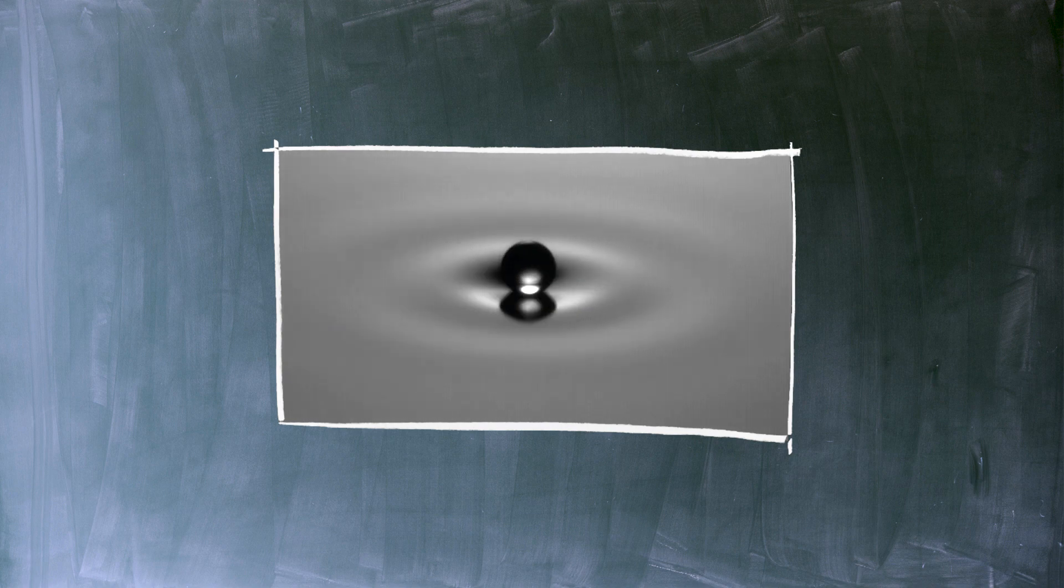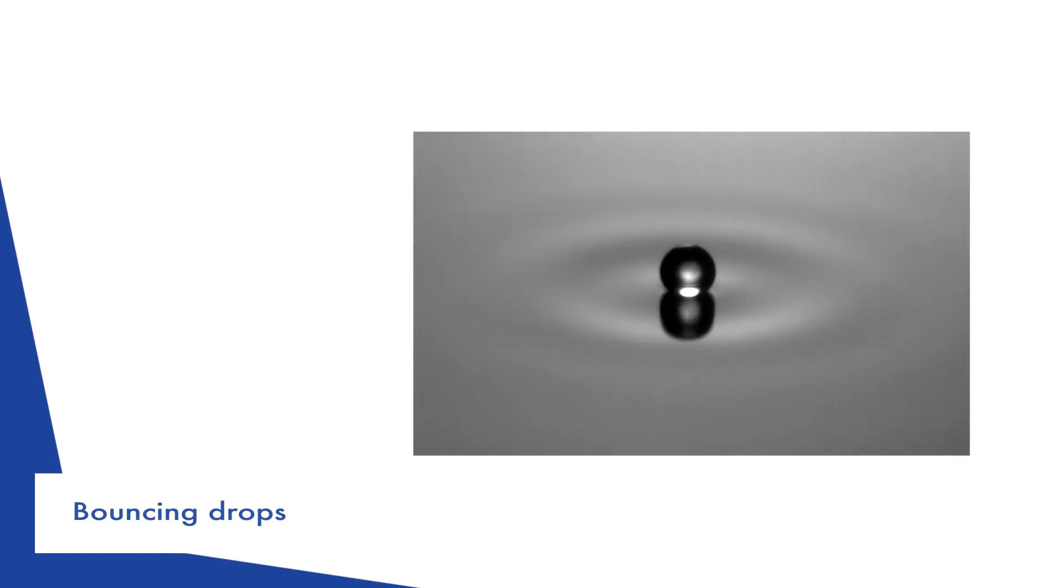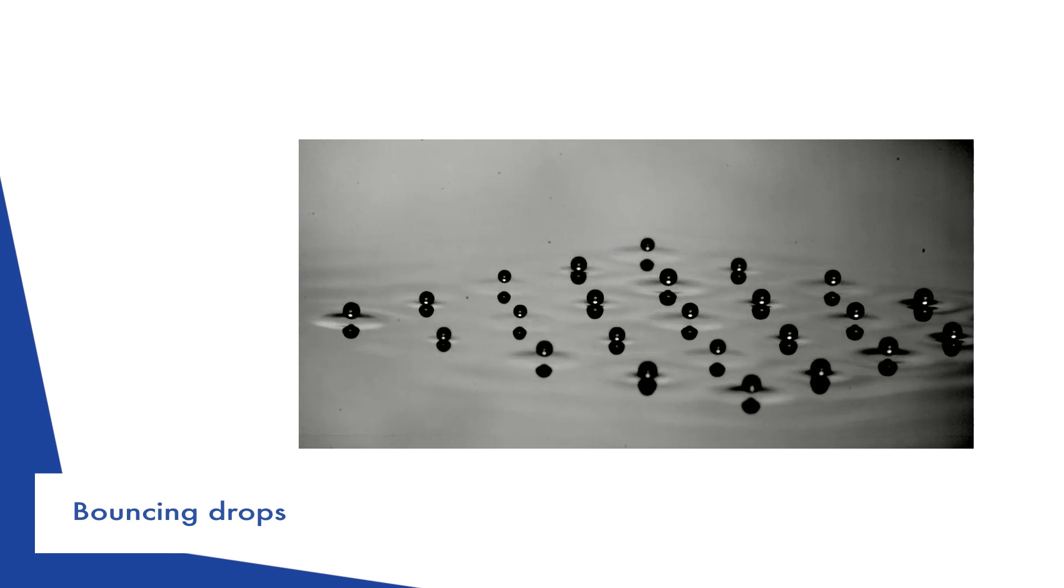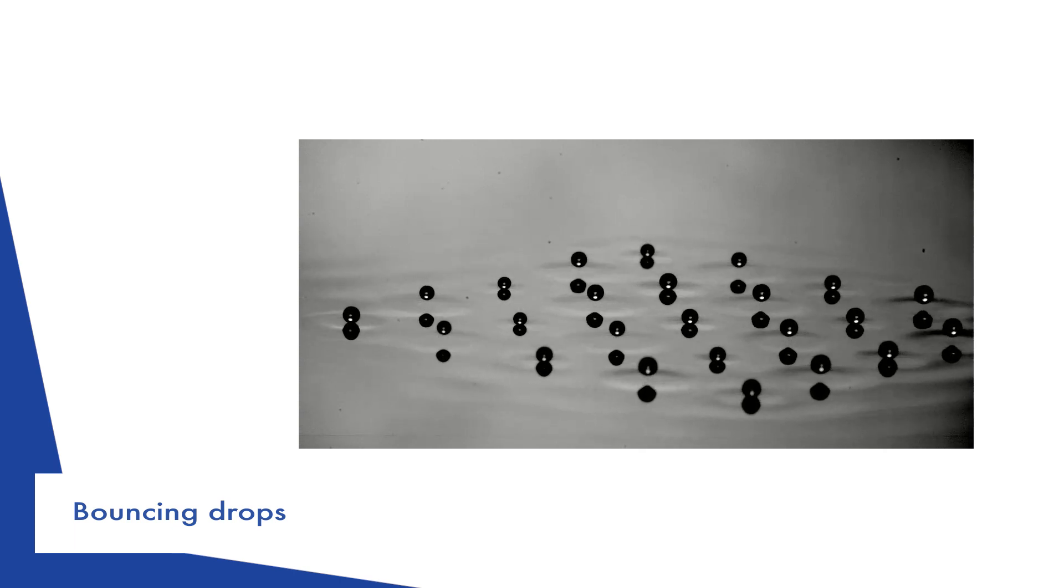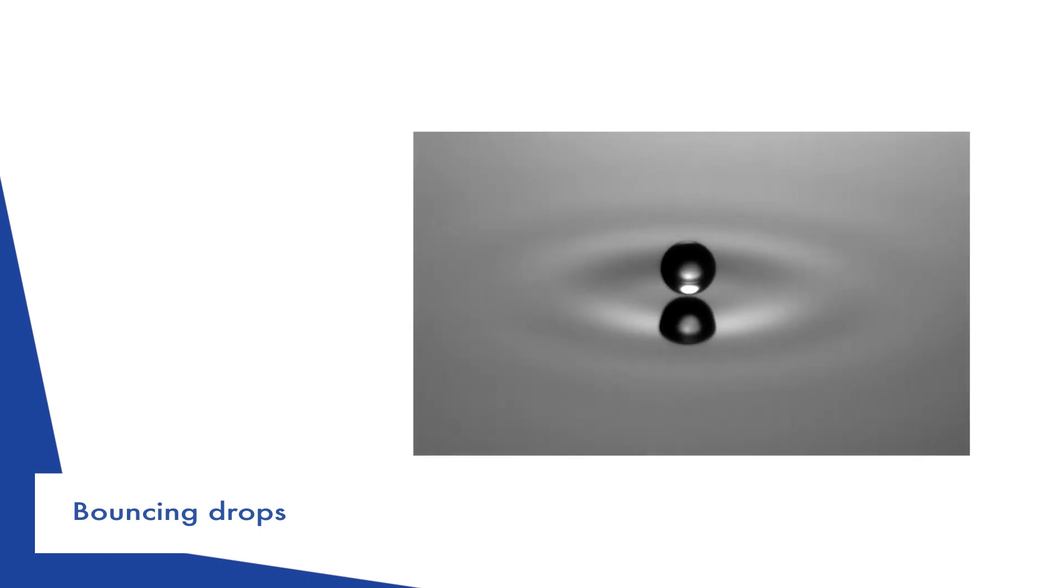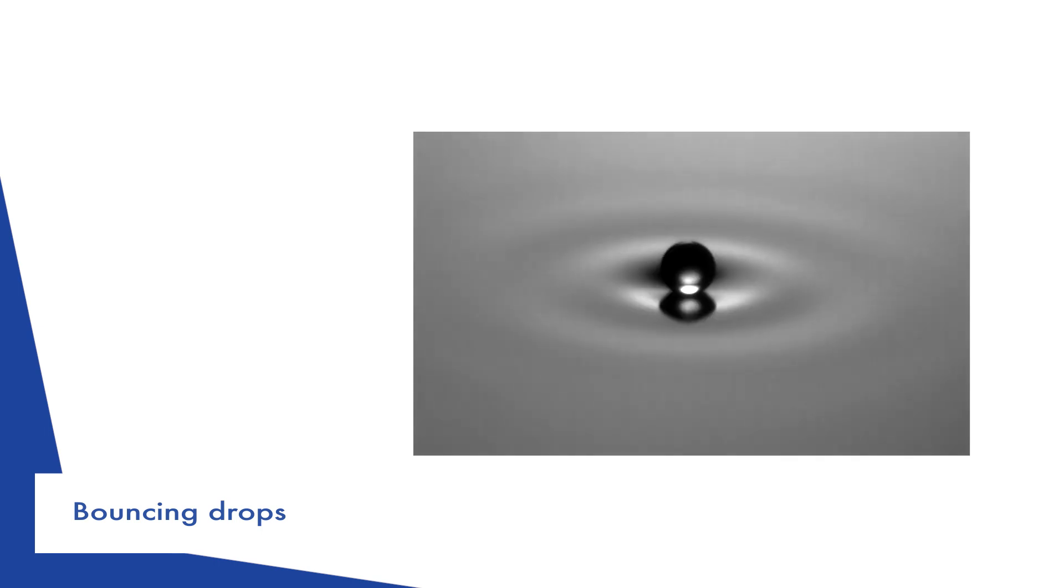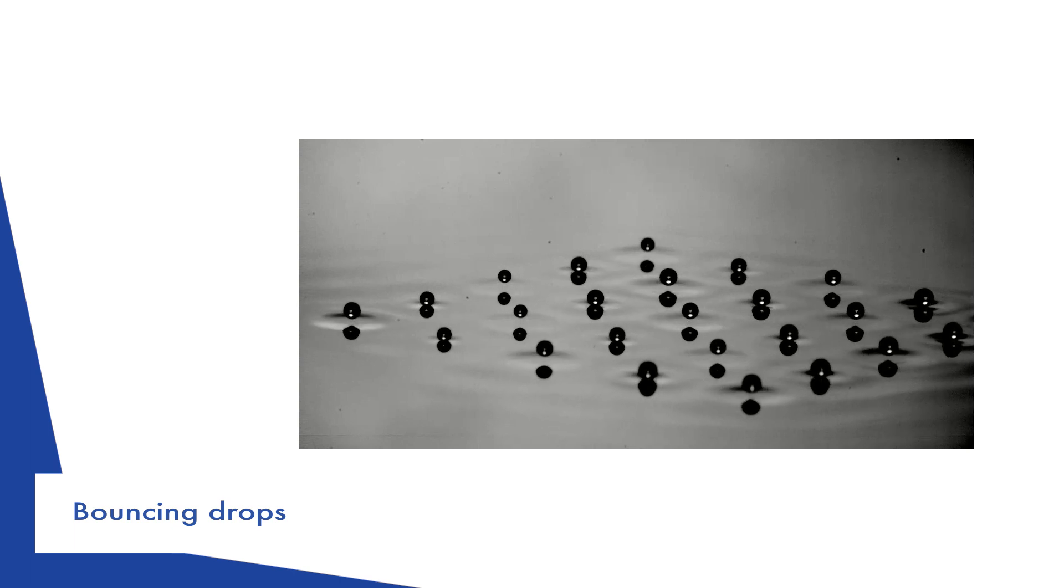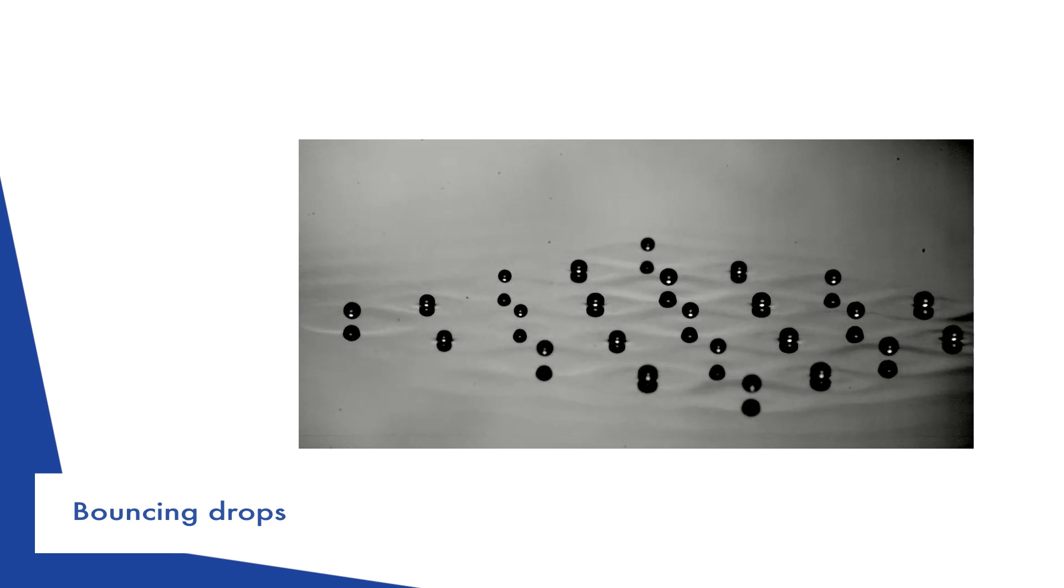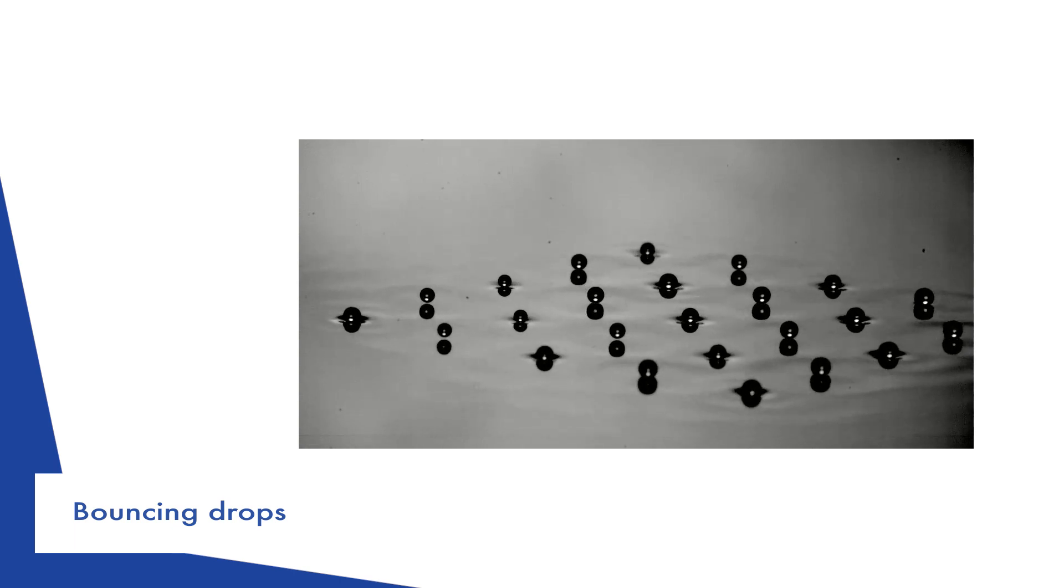When a drop is deposited on a bath of this same liquid, minimization of interfacial energy leads naturally to the coalescence of the drop with the bath. However, when the bath is vibrated vertically, coalescence can be suppressed if the frequency of oscillation is such that the film of air separating the drop from the bath does not have enough time to drain. Here, a millimetric droplet of viscous silicone oil is kept in a stable bouncing state. Capillary waves are excited on the surface by the impact of the drop and several drops bouncing simultaneously can be coupled by the waves. A square array of 25 drops oscillating in antiphase can thus be assembled as long as the container vibrates.